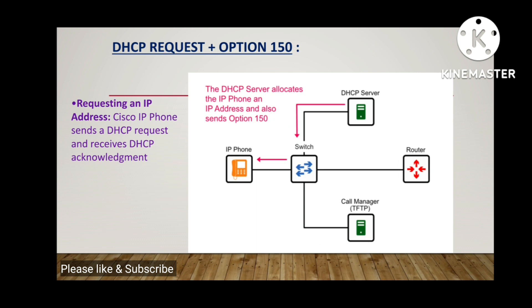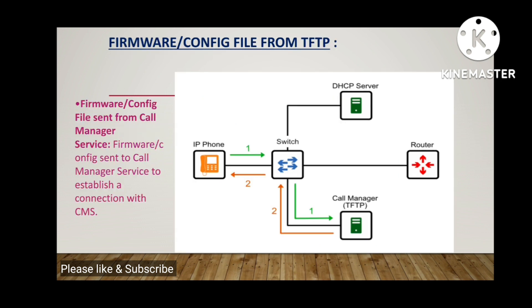If you see in this diagram, once the phone gets Option 150 from the DHCP server, it will request configuration files from the TFTP server. The TFTP server will then give configuration files and firmware files to the phone.